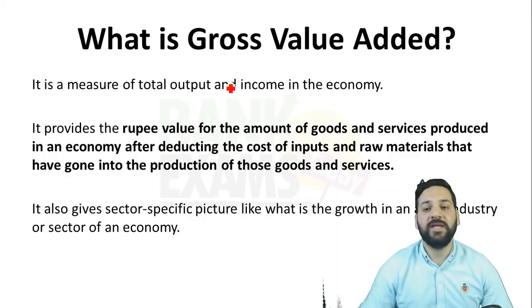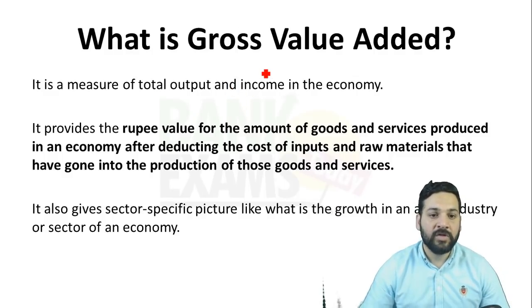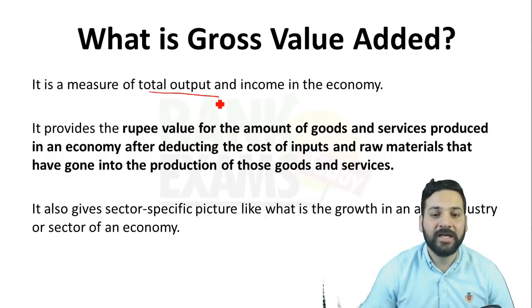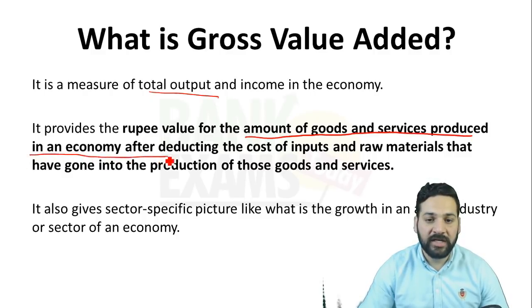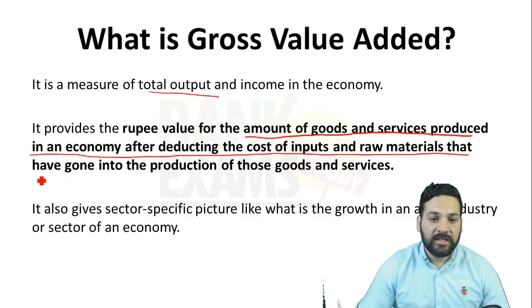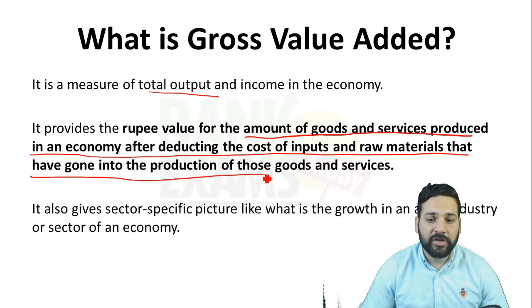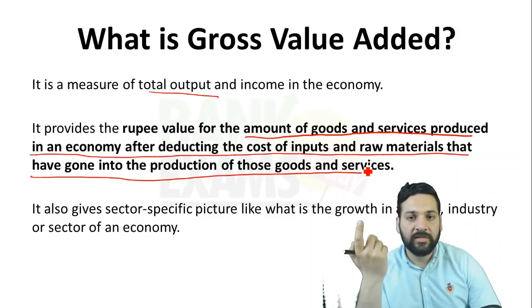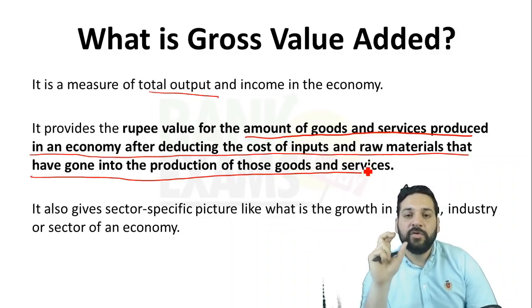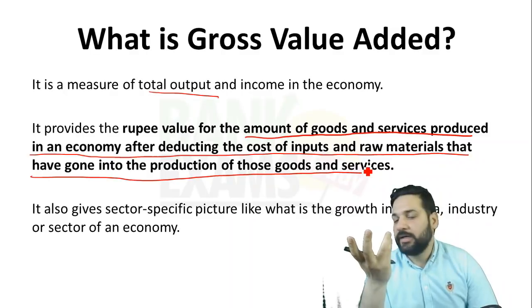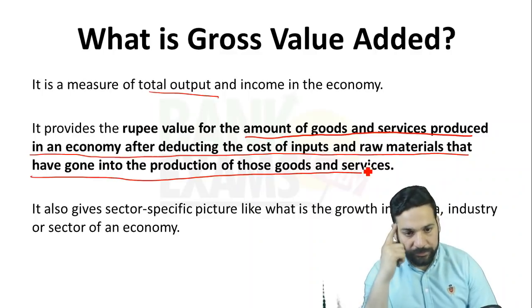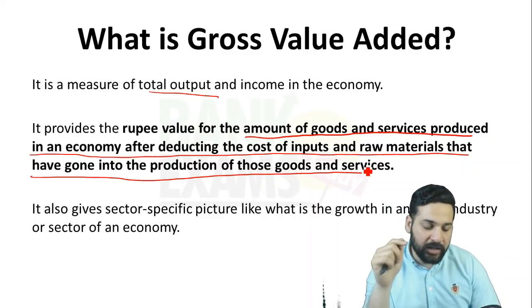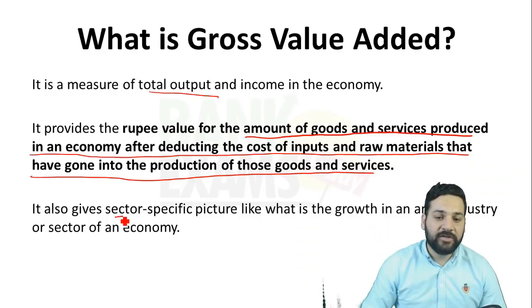So what is GVA and how is it different from GDP? GVA is a measure of total output and income in the country. GVA is the rupee value of the amount of goods and services produced in an economy after deducting the cost of inputs and raw materials that have gone into the production of those goods and services. In short, GVA is the value of goods and services produced in a country minus the cost of inputs and raw materials.